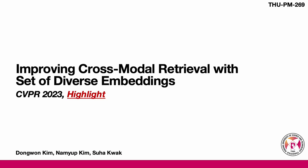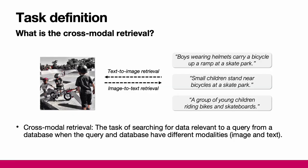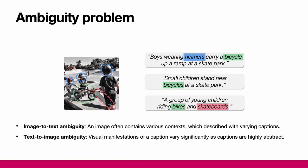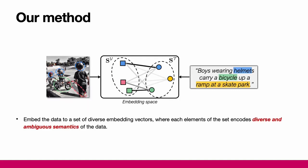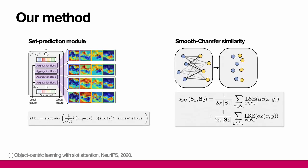In this presentation, I will introduce a novel cross-modal retrieval method that embeds data into a set of embedding vectors. The objective is to tackle cross-modal retrieval, which involves searching for data when the query and database have different modalities, focusing on the scenario when they are images and text. This task is recognized for an inherent ambiguity problem due to the polysemy exhibited by images and text. To address this issue, we propose embedding the data into a set of diverse embedding vectors, where each element captures the diverse and ambiguous semantics inherent in the data. For effective set-based embedding, we propose a slot-attention-based set prediction module and a novel set similarity function named smooth Chamfer similarity.